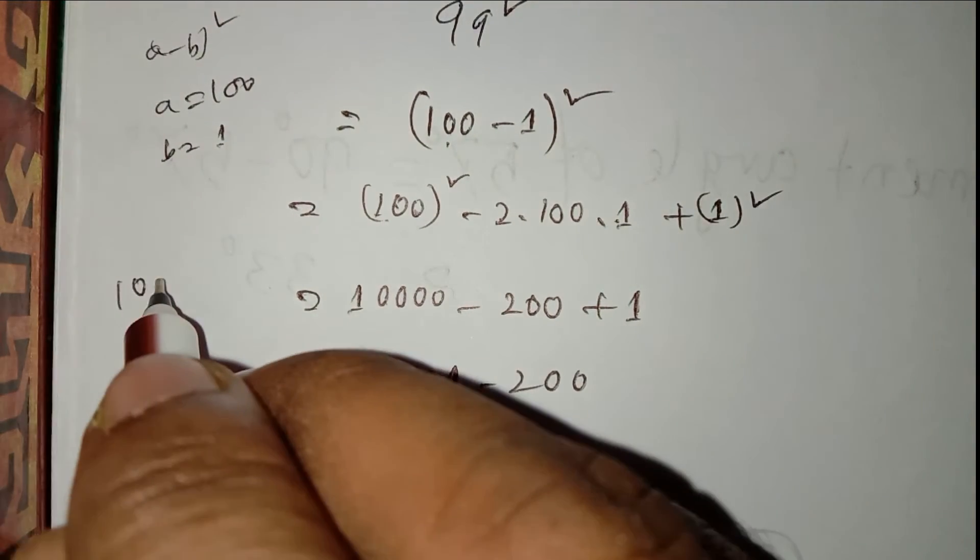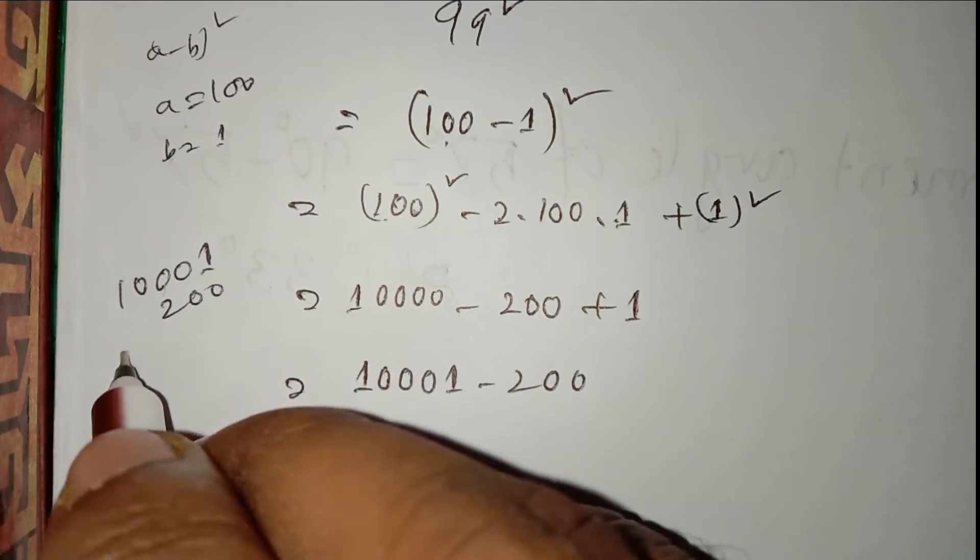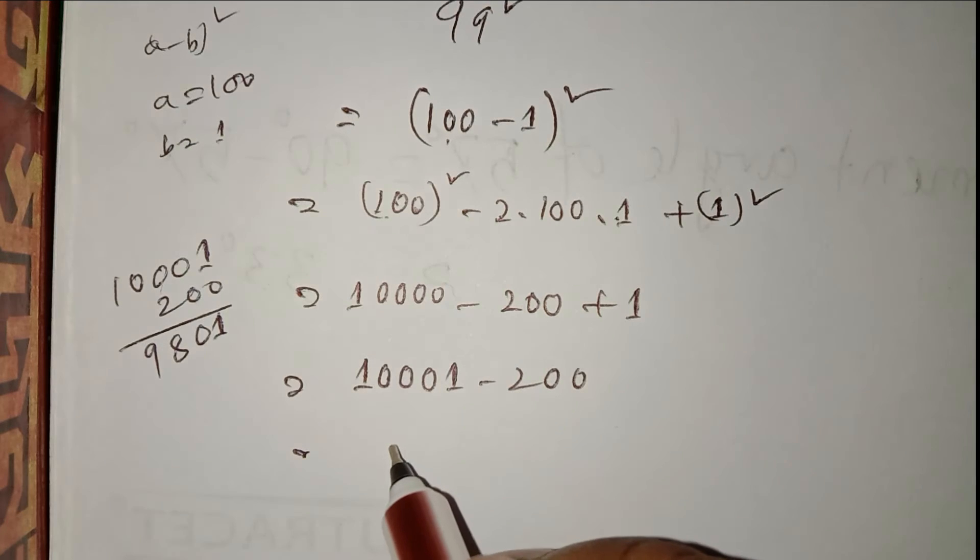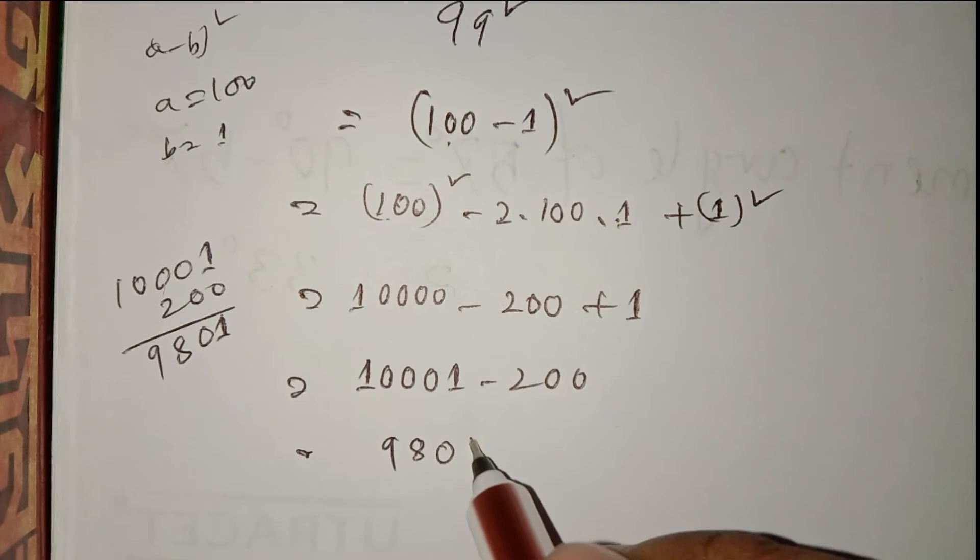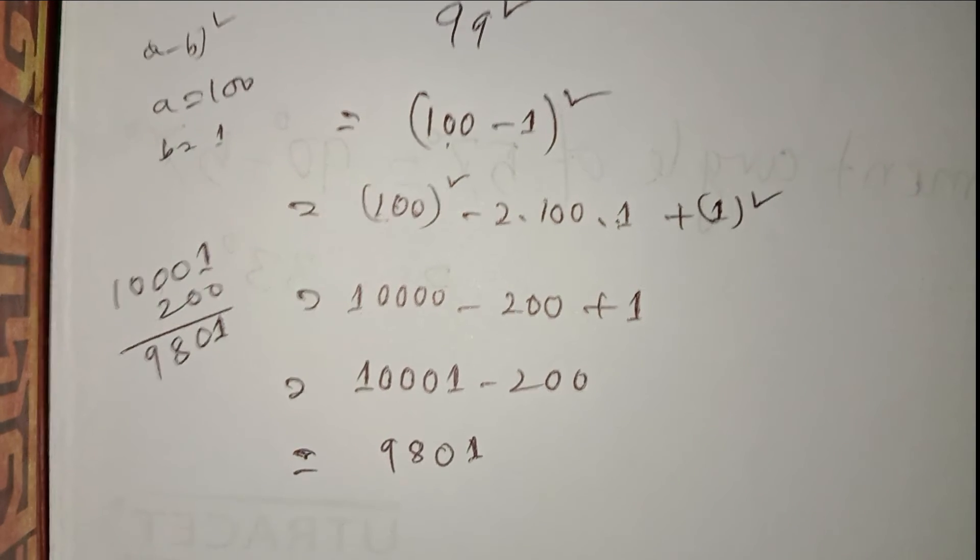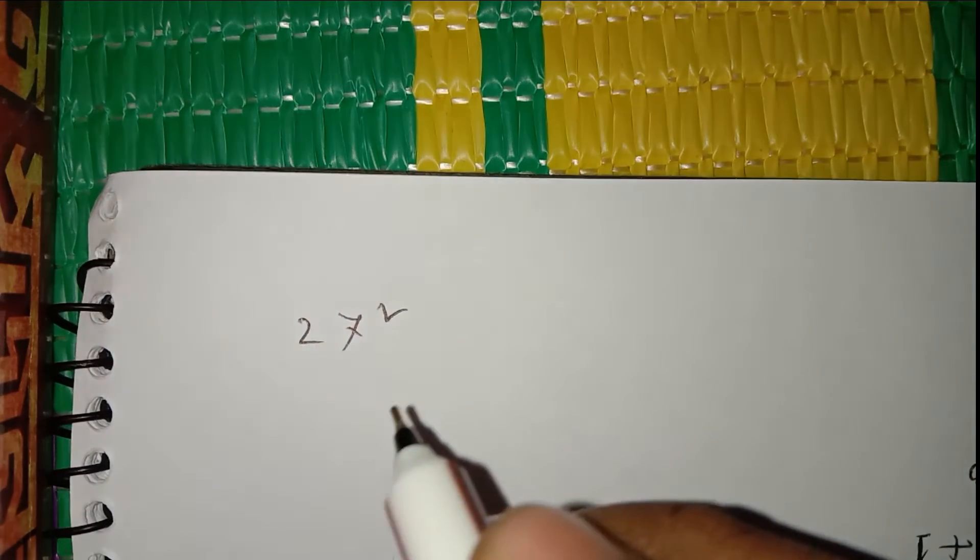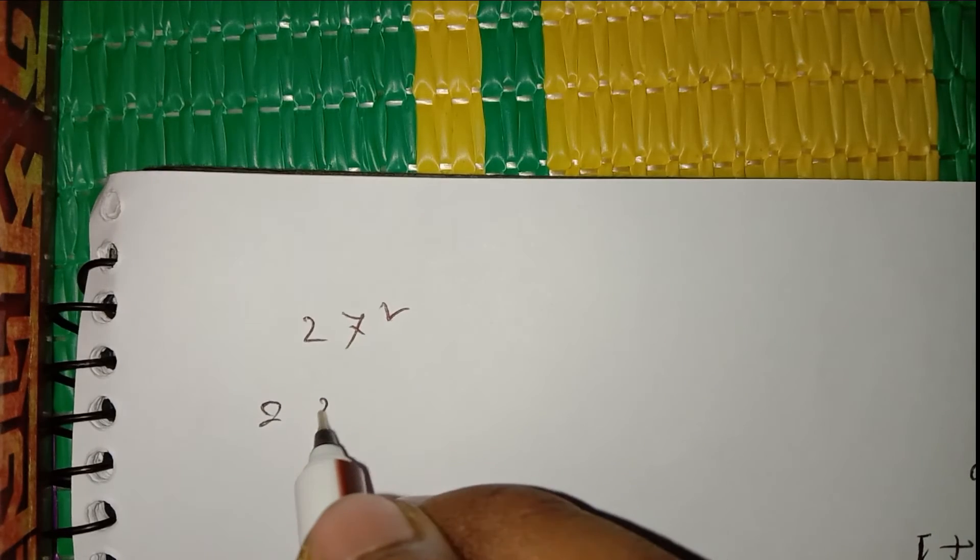Here is another: 27 square equals 20 plus 7 whole square equals 20 whole square plus 2 times 20 times 7.